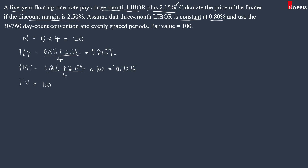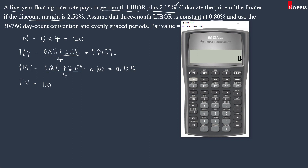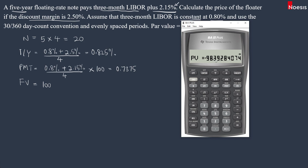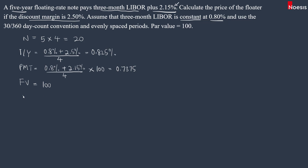With these inputs, we can use the financial calculator to compute the price of the floater. Press 2nd FV to clear the inputs. Enter N as 20, IY as 0.825, PMT as 0.7375, and FV as 100. Then compute PV, and you will get a price of 98.393 per 100 par.